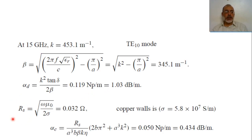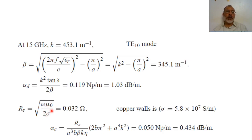The surface resistance Rs equals the square root of (omega · mu_0) / (2·sigma). Here omega = 2·pi·F, mu_0 = 4·pi×10⁻⁷, and sigma for copper is 5.8×10⁷ S/m. From this, the surface resistance Rs is 0.032 ohms.